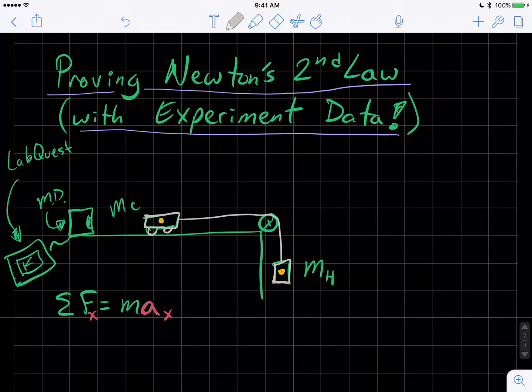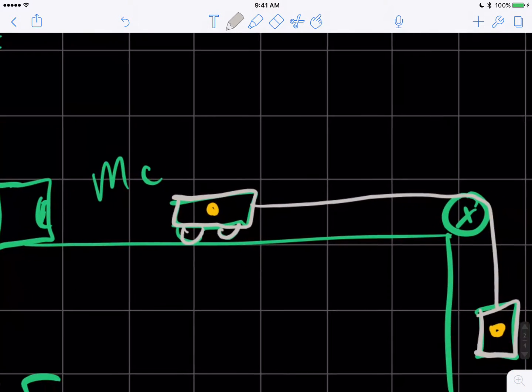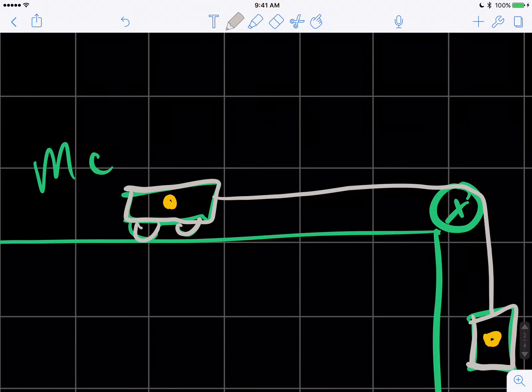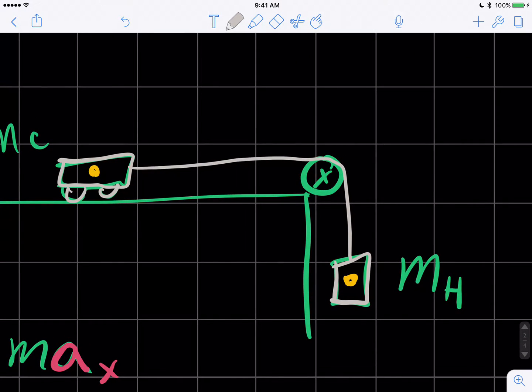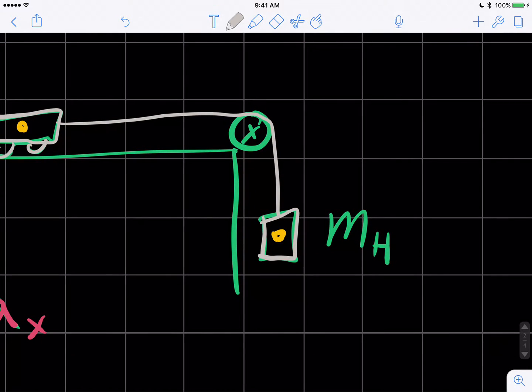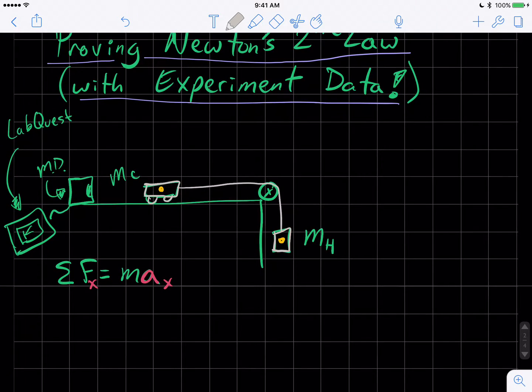When you're taking data, you're taking acceleration values off of velocity graphs. What we're doing is we're setting up this modified Atwood machine where we have a cart on a table, we're going to call it MC, the mass of the cart, and it's connected to a string that's running over a pulley. And we've got a hanging mass we're calling MH, the hanging mass.